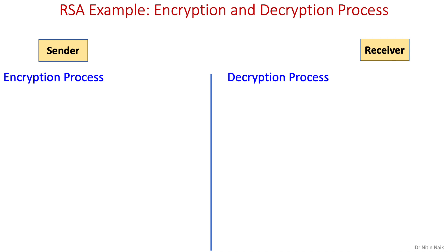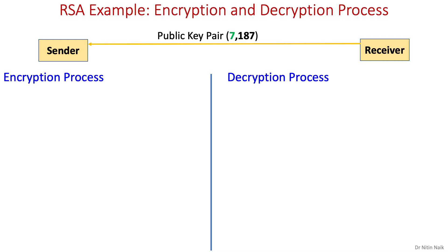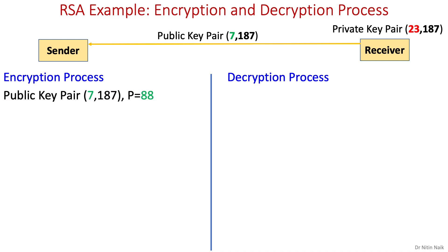Now that we have generated the public key and private key, we can perform encryption and decryption. Both keys are generated for the receiver. The receiver sends the public key to the sender and keeps the private key secret. For encryption, we need the public key and the plain text. Let's assume plain text M = 88.